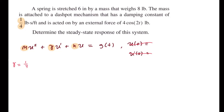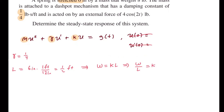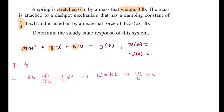We're also given that the spring is stretched six inches — that is our stretched length l, which is six inches. Let's convert that to feet: multiply by one foot over twelve inches, which gives us one-half of a foot. Using the equation w equals k times l, we get k equals w over l. Since w is eight pounds, we have eight divided by one-half equals k, which is 16.